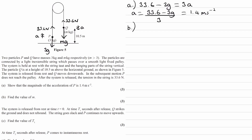For part B, find the value of M. Let's do a similar thing for Q. I'm just going to update the accelerations — we have 1.4 as the acceleration for P, but just in the opposite direction. Considering the equation of motion for Q, it's accelerating downwards, therefore Mg is the bigger force. Mg minus 33.6 is the overall downwards resultant force, equal to MA, equal to M times 1.4.